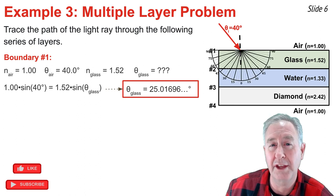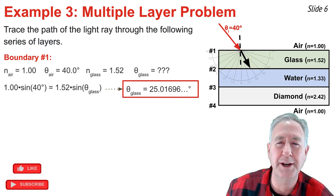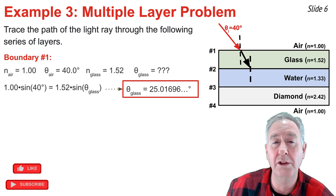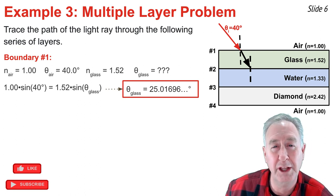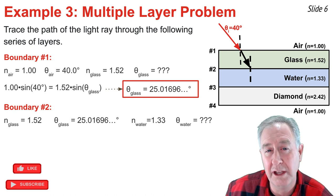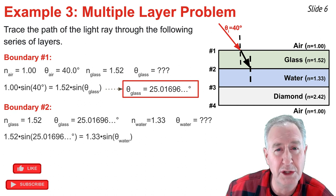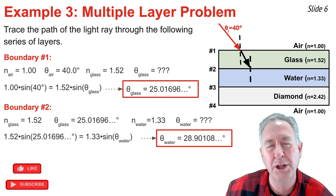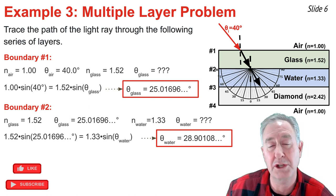On the diagram I lay a protractor down and draw the refracted ray about 25 degrees from the normal line. At boundary two, the angle of incidence in the glass equals the angle of refraction at boundary one, since these are alternate interior angles of parallel lines — the parallel lines being the normal lines. So at boundary two, the angle in the glass is 25.01 degrees. Knowing the index of refraction in glass and water, I substitute into Snell's Law, divide by 1.33, take the inverse sine, and get about 29 degrees. I measure out about 29 degrees and draw the refracted ray.